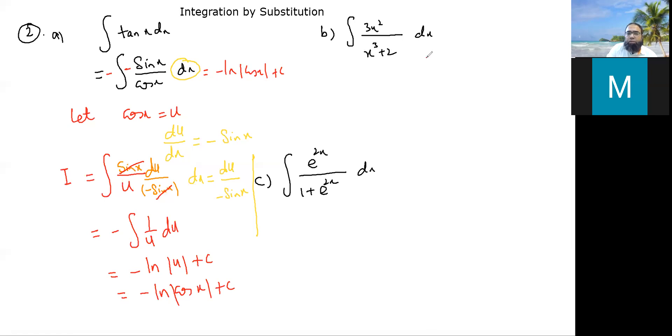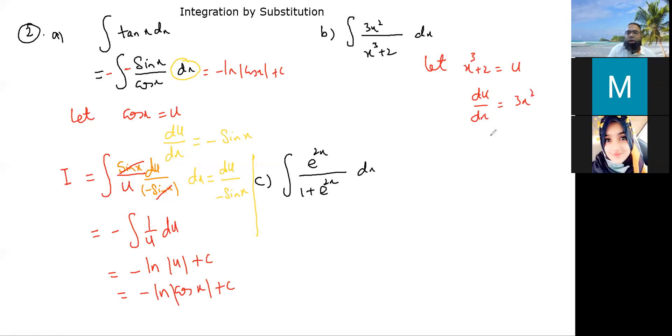Now, here, if I say that substitute this x cubed plus 2 with a u, okay? So, what is your du by dx? That is going to be 3x squared, okay? And then by rearranging this, this dx becomes du over 3x squared, okay?